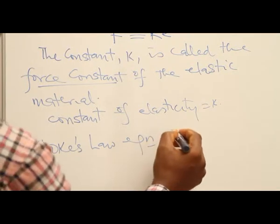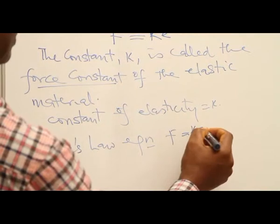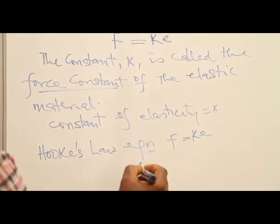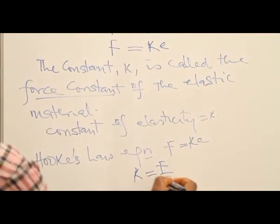We look at it again: force is equal to the force constant times extension. From here we now get that the force constant is equal to F over e, the force divided by the extension.